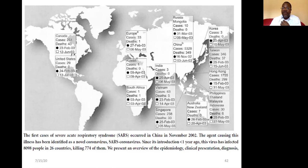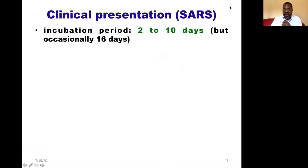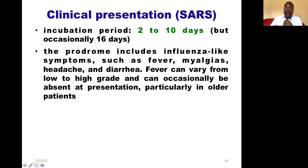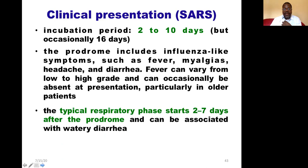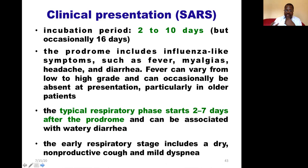The person's death was fortunate for control of the epidemic because there was no further cross-transmission from that index case. The clinical manifestations of SARS: the incubation period is 2 to 10 days, occasionally up to 16 days. The prodrome starts like flu-like symptoms — fever, myalgia, headache, and diarrhea. Fever can vary from low to high grade.